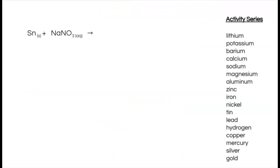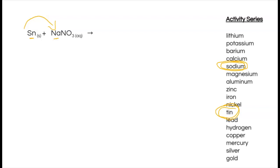Let's try a second example. I can see right away this is a single displacement reaction — I have tin, which is an element, and sodium nitrate, which is a compound. For this reaction to proceed, tin needs to bump out sodium. Checking the activity series, tin is below sodium, so tin does not have the strength to pull sodium away from the nitrate. The result is no reaction.